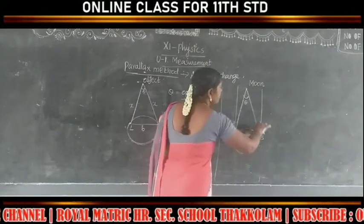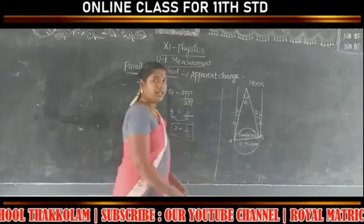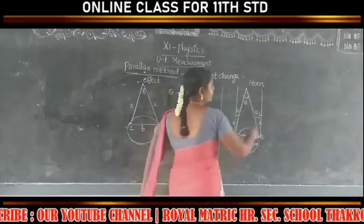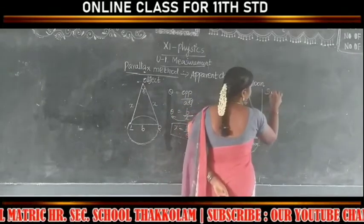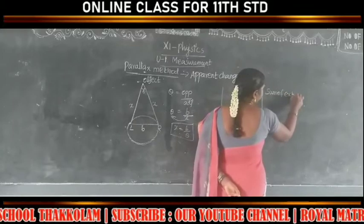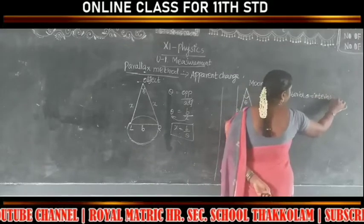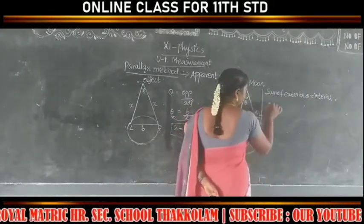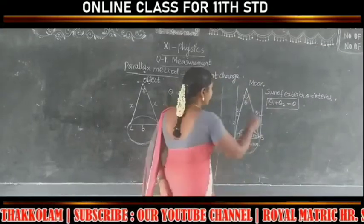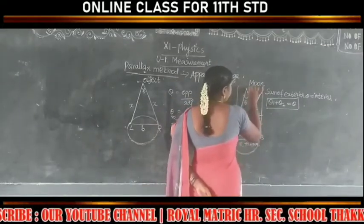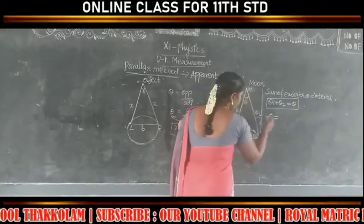We drop an imaginary line. We say theta₁ and theta₂. Theta₁ is equal to theta₂. According to the properties of angles, the sum of exterior angles: theta equals the sum of the interior angles. So theta₁ plus theta₂ equals theta. This is the point — the Moon.